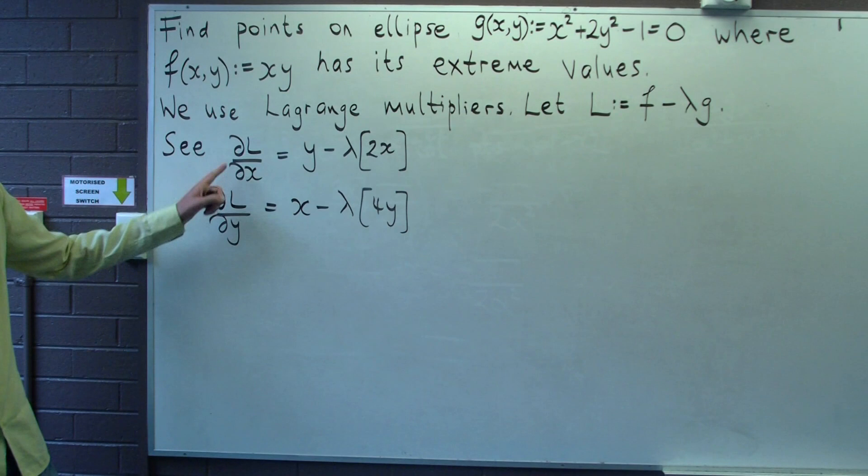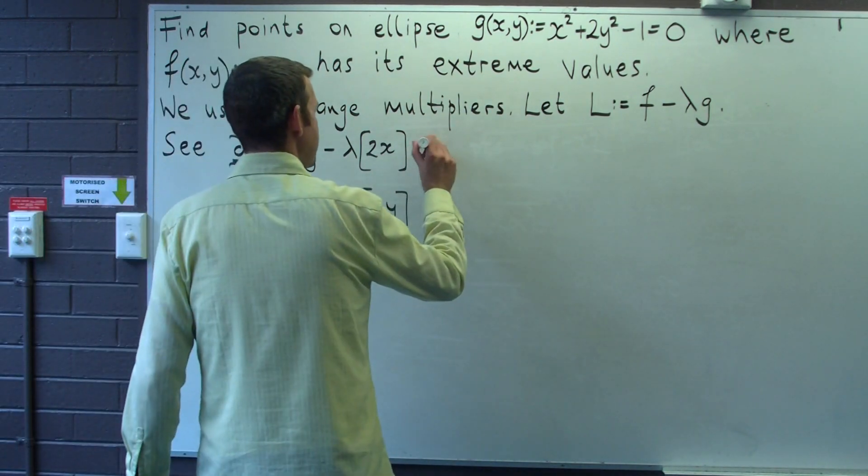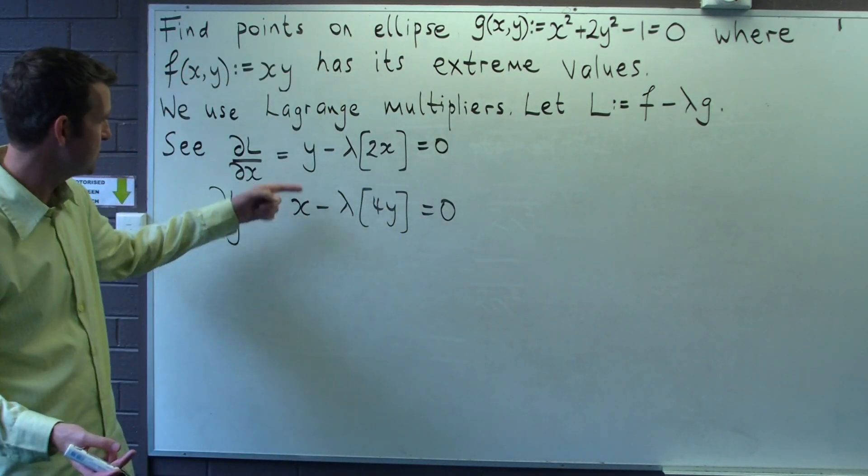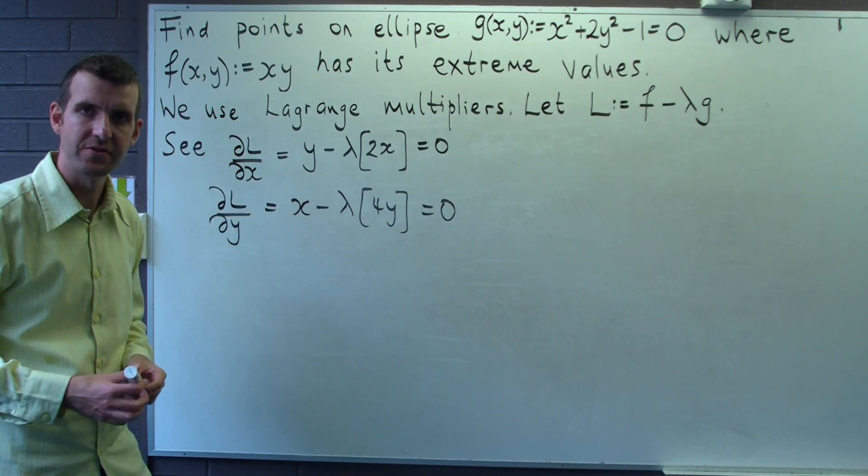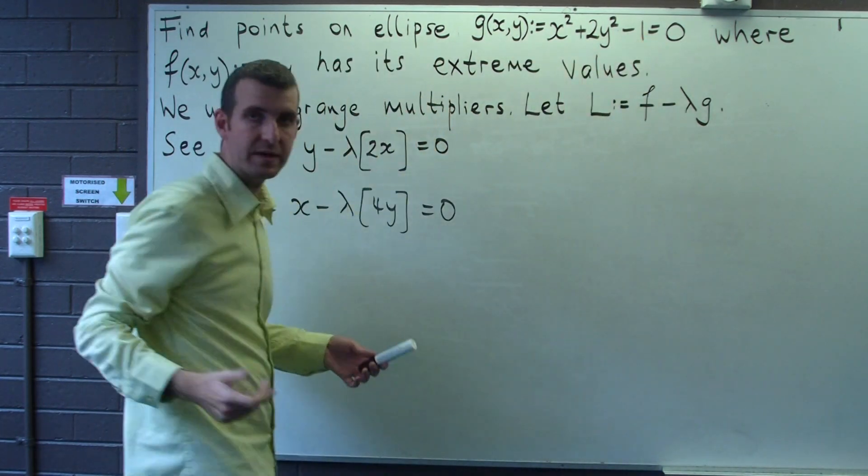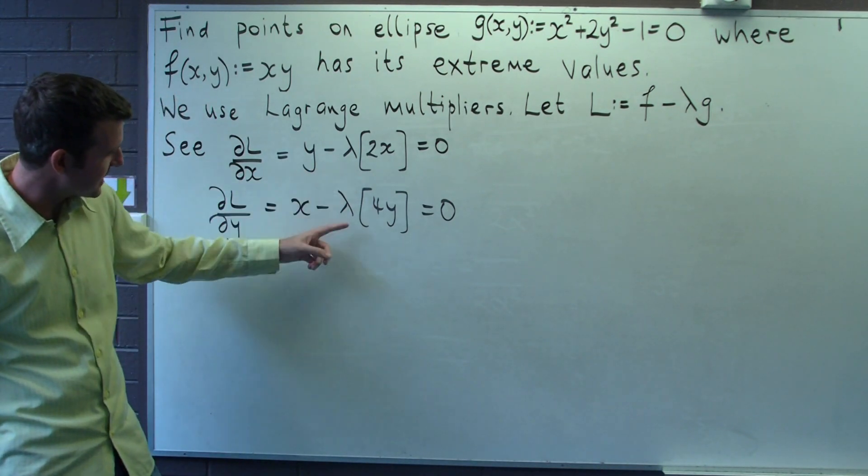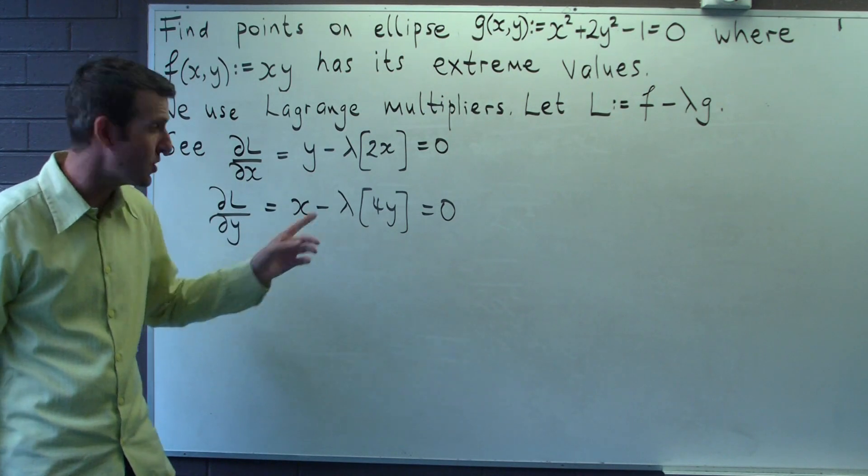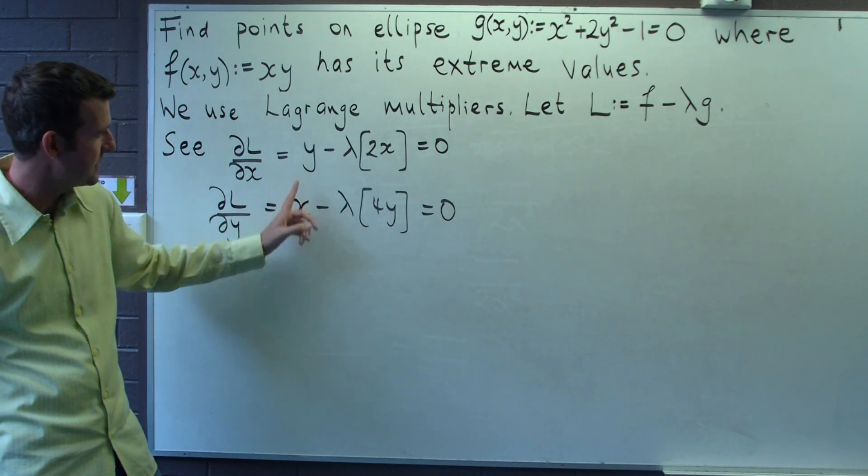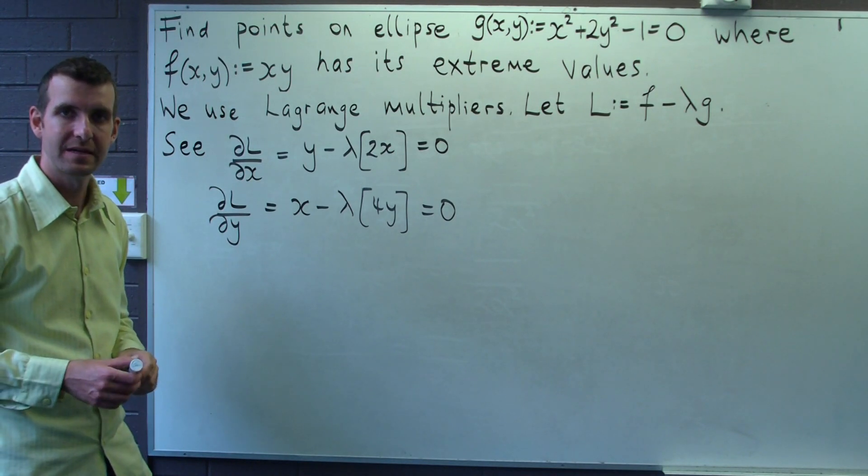Okay, we set these two partial derivatives equal to zero and then solve. But how do we do that? We've got two equations and three unknowns. Well, don't forget we have the constraint g equals zero, and we can use that to our advantage. So what I'm going to do with these two particular equations is multiply the first one by x and the second one by y, so they have the same term. We'll both have an xy and xy.